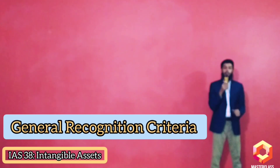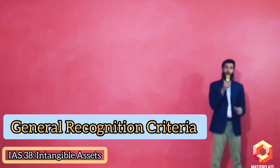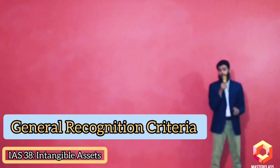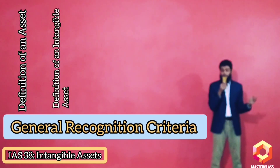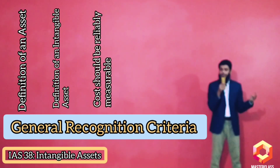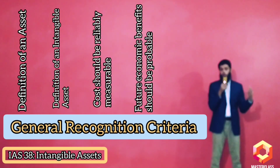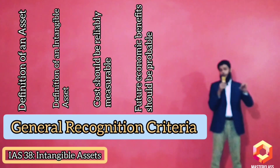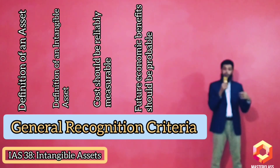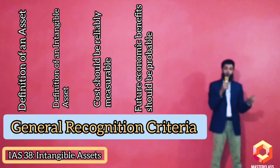Now let's look at the general recognition criteria of an intangible asset. For an asset to be recognized as an intangible asset, it should meet the definition of an asset, meet the definition of an intangible asset, the cost of that intangible asset should be measurable reliably, and it should be probable that the future economic benefits will flow to the entity. The definition of an asset said it should be 'expected' that future economic benefits flow to the entity, but here the standard elaborates and enhances that requirement to probability — meaning more than a 50% chance of happening.